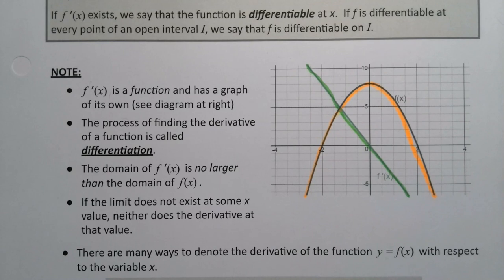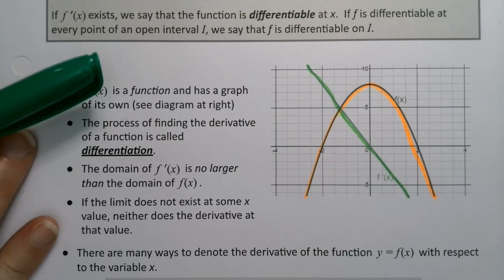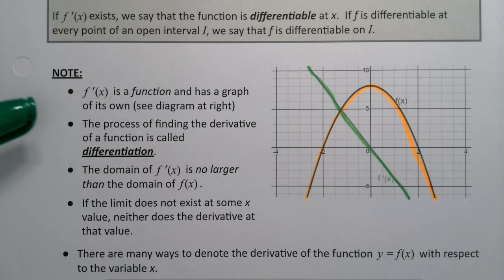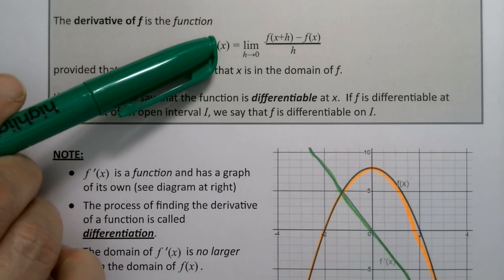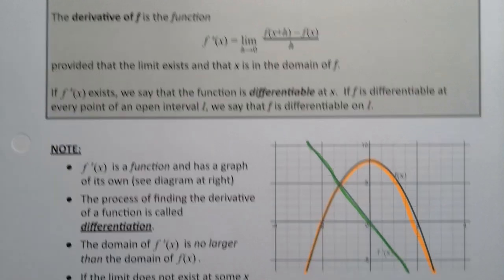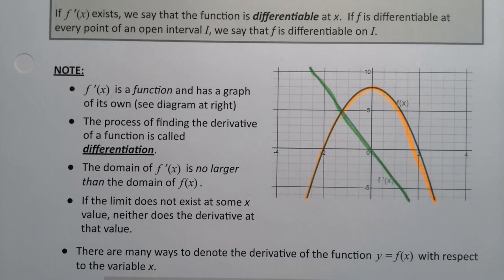The process of finding that derivative is called differentiation. If you remember, every Calc 1 instructor in the world has you practicing with this limit of the difference quotient. And then after about one section we all go, well that was terrible, let's figure out some other ways to do it like the product rule, the quotient rule, chain rule, that kind of thing.